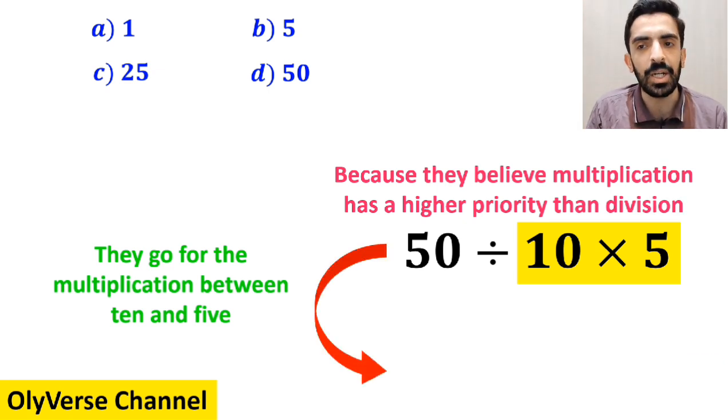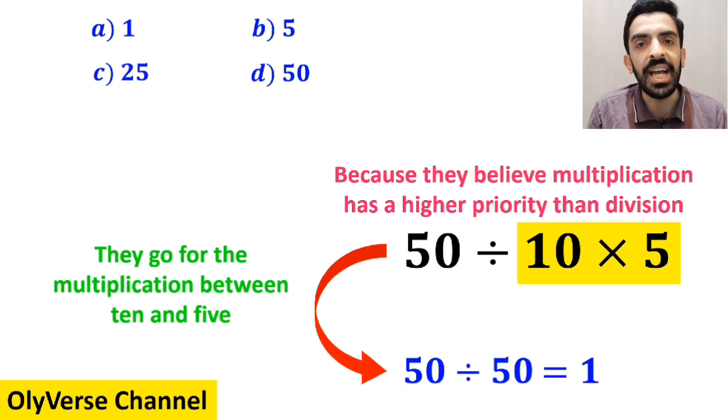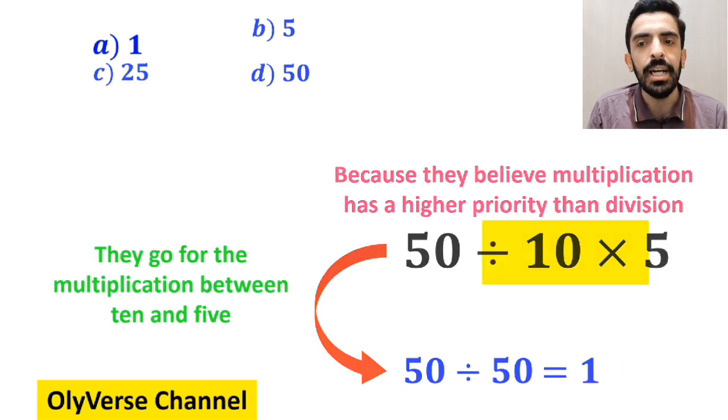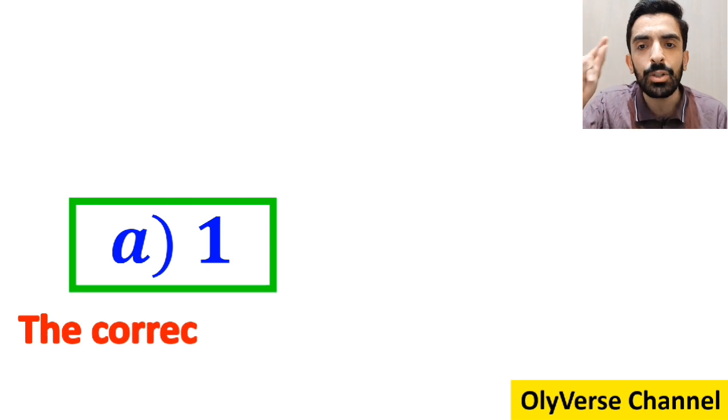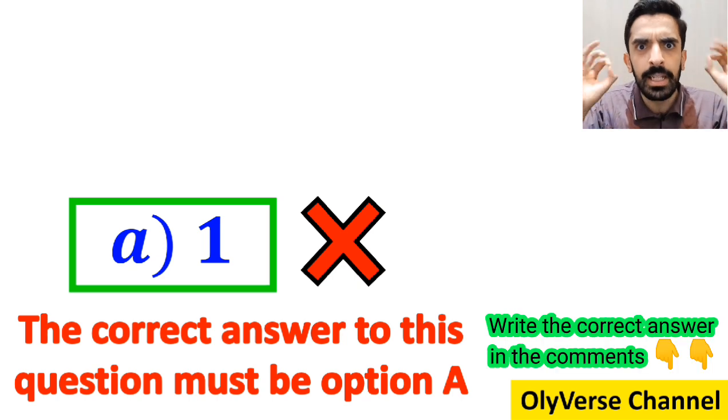So they simplify this expression and write it as 50 divided by 50, which finally gives them the answer 1. Then, without any hesitation, they conclude that the correct answer to this question must be option A. However, this answer is absolutely wrong.